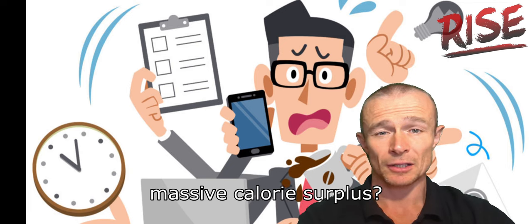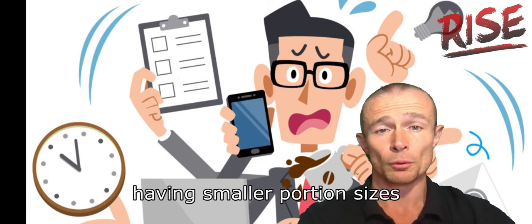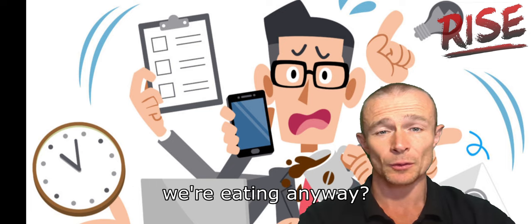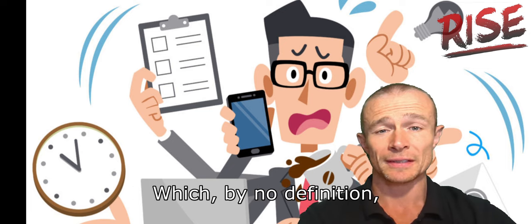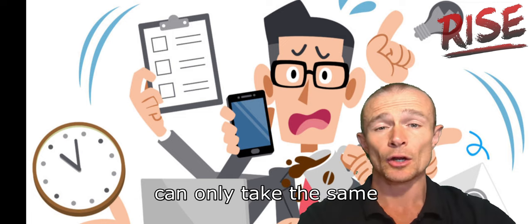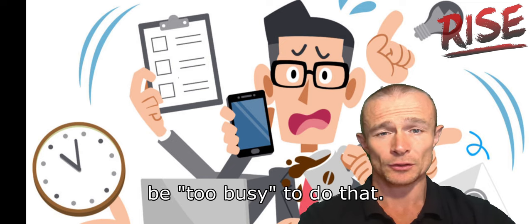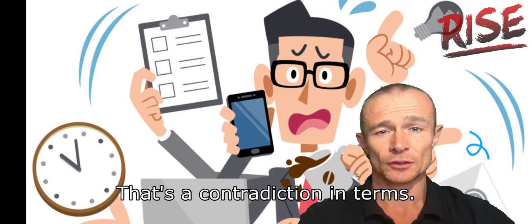We may well be too busy to eat absolutely perfectly. Does that really mean we had to eat in a massive calorie surplus, or could we have just eaten in a calorie deficit by having smaller portion sizes of the same thing we were eating anyway, which by no definition can ever take any more time? Eating less of the same food can only take the same or less time. We can never ever be too busy to do that. That's a contradiction in terms.